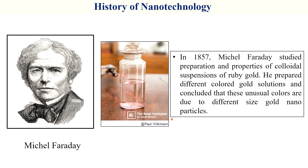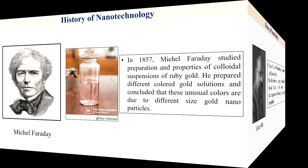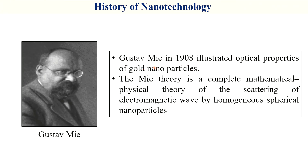In 1857, scientist Michael Faraday studied the preparation and properties of colloidal suspensions of ruby gold. He prepared different-colored gold solutions and concluded that these unusual colors are due to different sizes of gold nanoparticles. In 1908, Gustav Mie illustrated the optical properties of gold nanoparticles. Mie theory is a complete mathematical and physical theory of scattering of electromagnetic waves by homogeneous spherical nanoparticles.